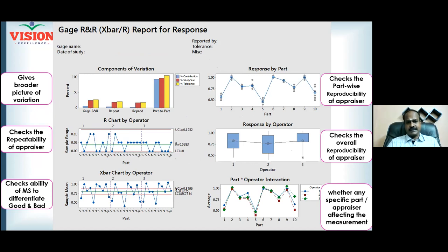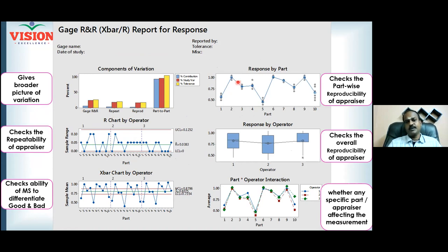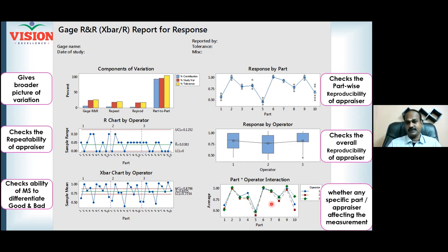Here are the six graphs. The first graph is a bar chart. The second graph is a control chart — specifically an X-bar chart. The third is also a control chart — specifically an R chart. The fourth is 'response by part,' which is a dot plot with dots connected by lines. The fifth is a box plot with three boxes. The sixth is again a dot plot with a combination of lines. Each graph gives us beautiful information about what is going wrong in our measurement system.